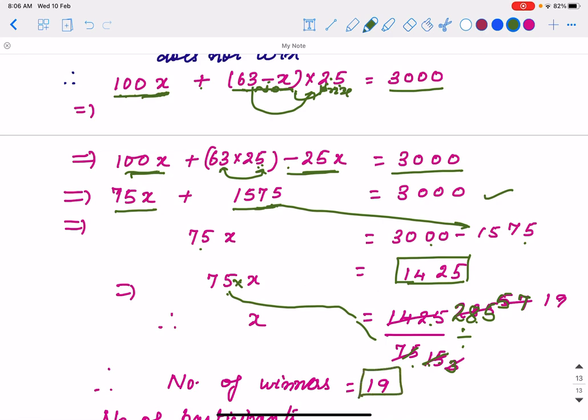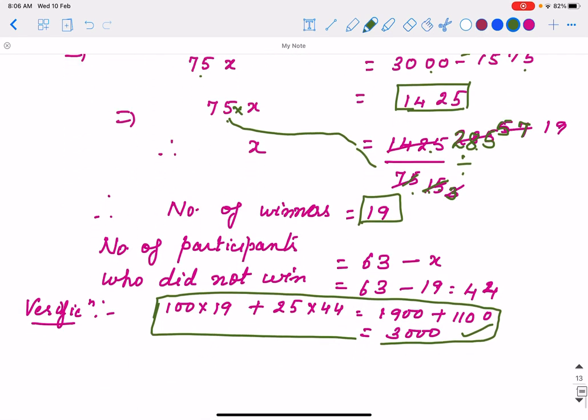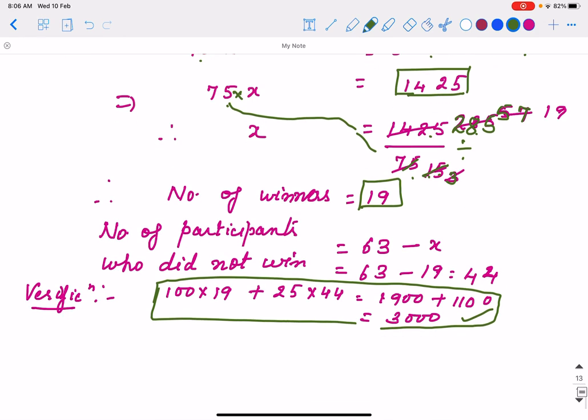So, number of winners X, we are getting 19. So, who did not win is 63 minus X, it is 44. You can verify your answer that 100 into 19 plus 25 into 44, we are getting 1900 plus 1100 total sum of 3000. That means your solution is correct. This way you find out.